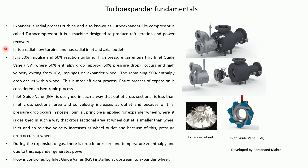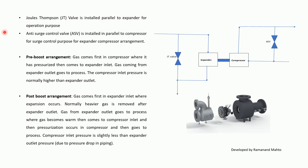The flow is controlled by the Inlet Guide Vane installed upstream of the Expander Wheel. The machine consists of an Expander Housing, a Compressor Housing, and in between a Rotating Assembly connecting the rotor. The Joule-Thomson Valve (JT Valve) is installed in parallel to the Expander for operation. The Anti-Surge Control Valve (ASV) is also installed in parallel to the Compressor for surge control.